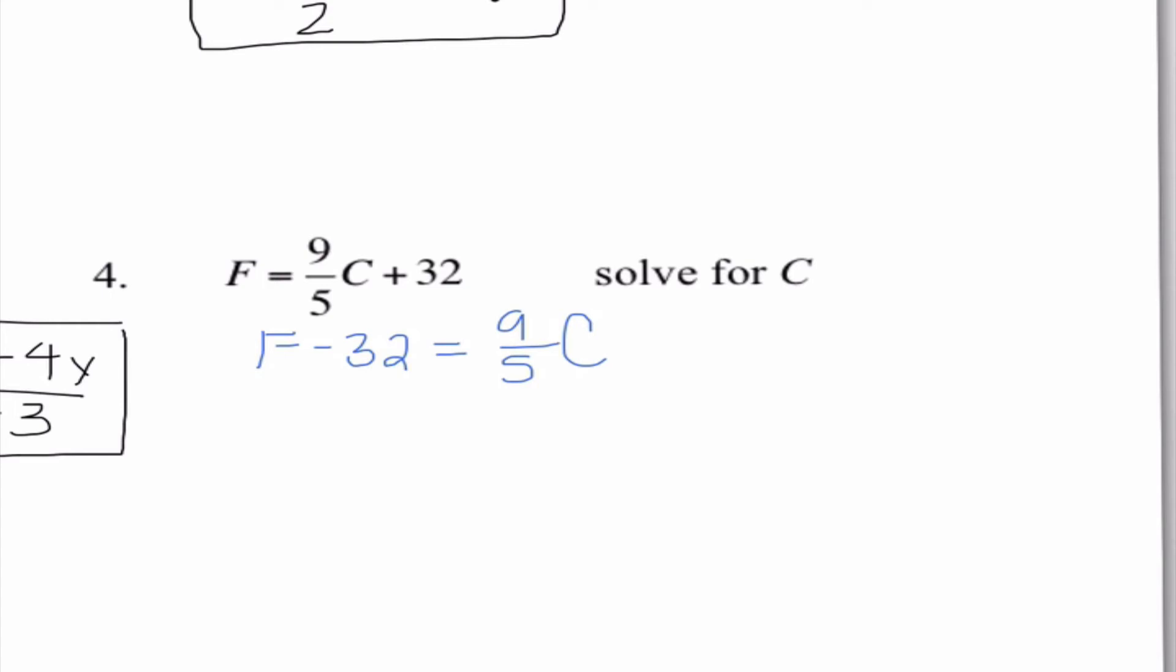Now I need to get C by itself, so I need to think, what is going to turn this coefficient into a 1? And that would be multiplying by the reciprocal, which is 5 over 9. So when I do that, I have 5 ninths times the quantity F minus 32 equals C. I would be totally fine if you left this as your answer because we have accomplished what the problem is asking us to do, which is solve for C. If we wanted to, we could also distribute the 5 ninths to both of those terms and give that as a final answer as well.